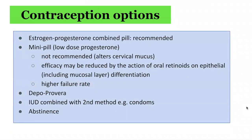In terms of contraception options, estrogen and progesterone combined pill is recommended. The mini pill, which is a low-dose progesterone, is generally not recommended as it alters cervical mucus and its effectiveness may be reduced by the action of oral retinoids on the epithelial mucosal layer, and it has a high reported failure rate. Other contraception options include Depo-Provera, an intrauterine device combined with a second method of contraception such as barrier condoms, as well as abstinence.